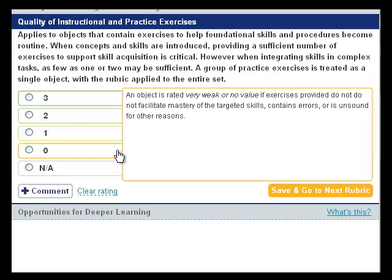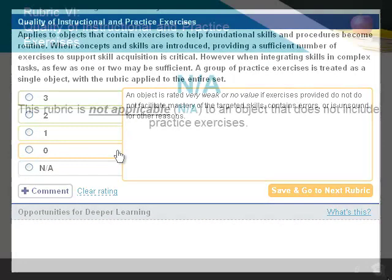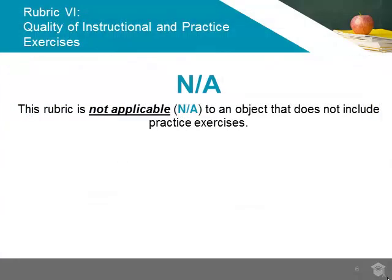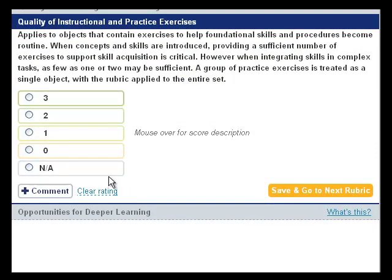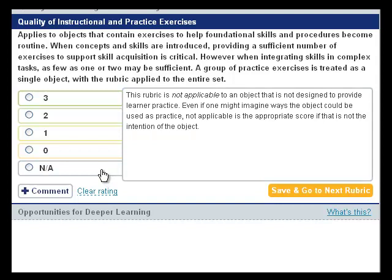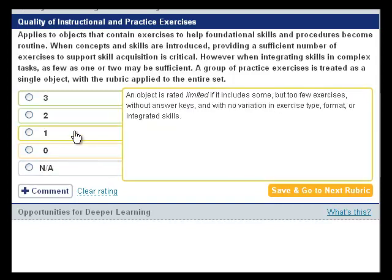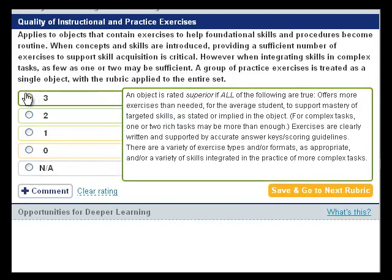Remember, if an object contains no instructional or practice exercises, it should receive an NA rating for this rubric. If you are satisfied with your rating, click Save and Go to Next Rubric in the bottom right-hand corner.